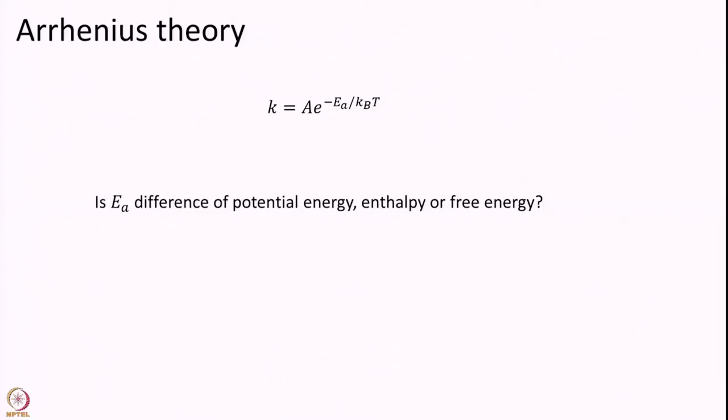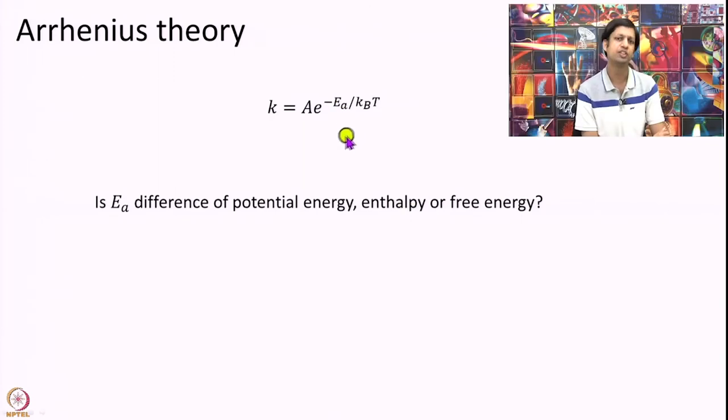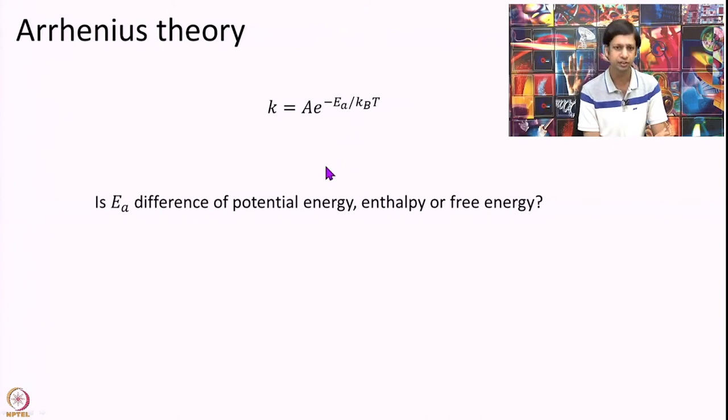So, let us start with this question. Arrhenius had originally written this formula. Well, Wendt had and Arrhenius had interpreted this as some activated state. But what exactly is Ea exactly? So, to answer that let us analyze our theory a little bit. But to do that I will need a few thermodynamic relations today.